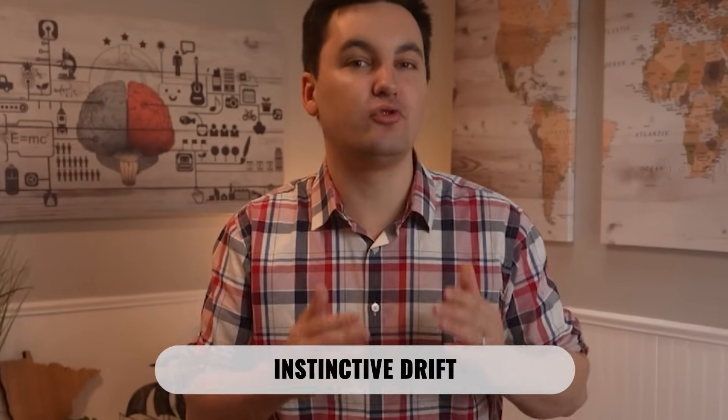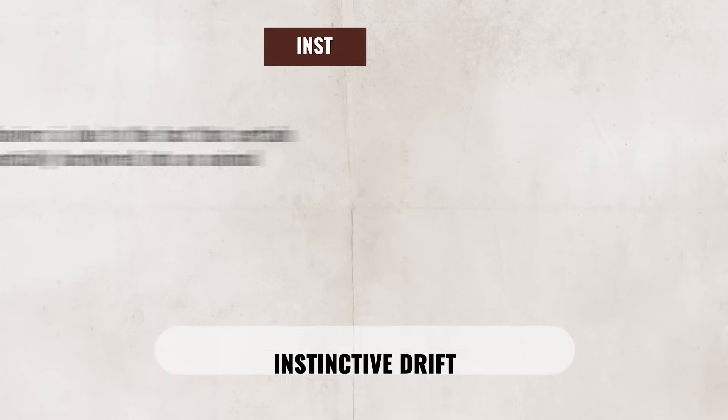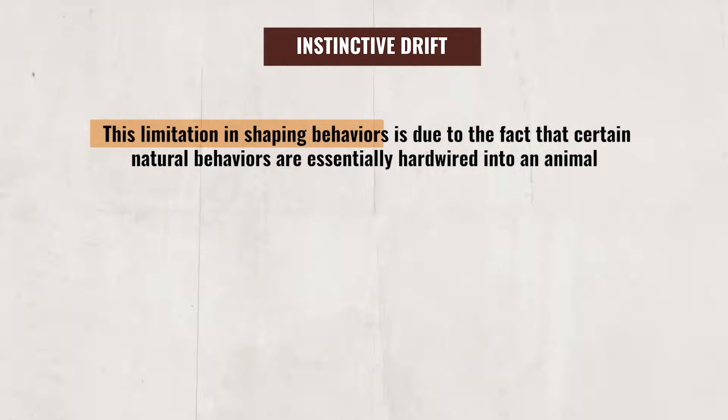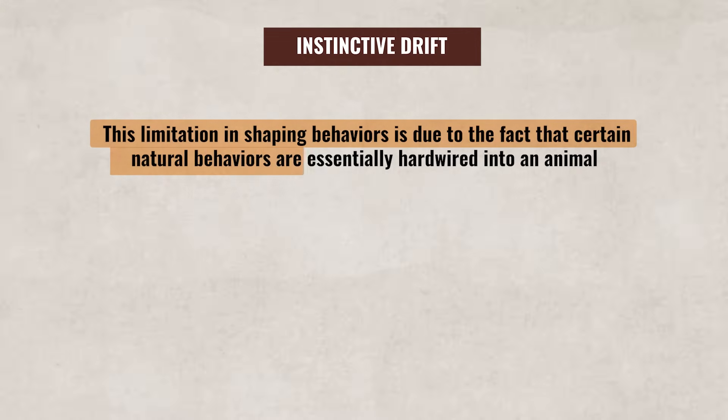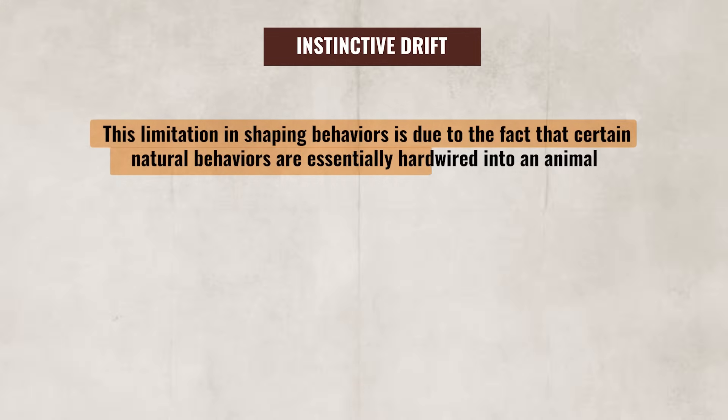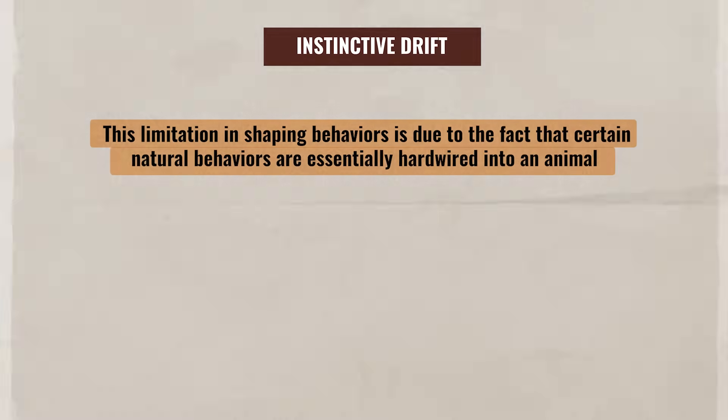Even if shaping is done perfectly, we can see that some learned behaviors for animals will fade due to instinctive drift. This limitation in shaping behaviors is due to the fact that certain natural behaviors are essentially hardwired into an animal. So even though reinforcement can be highly effective, certain behaviors are harder to shape, especially if they go against an animal's natural instincts.